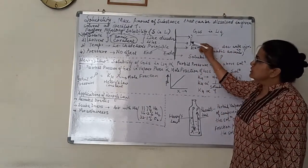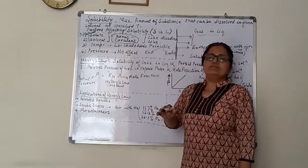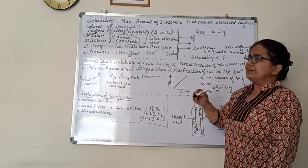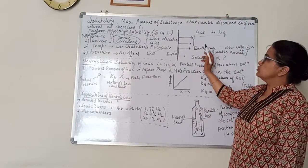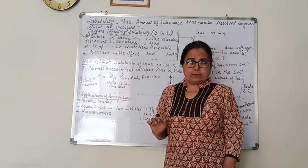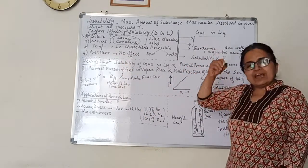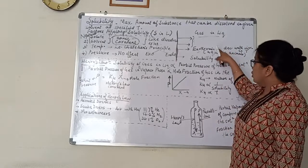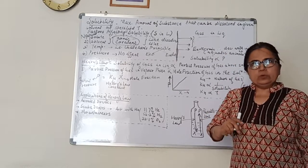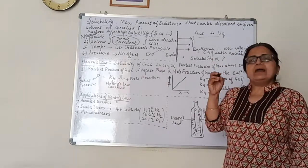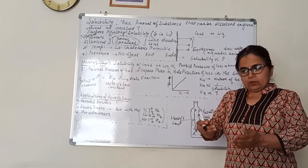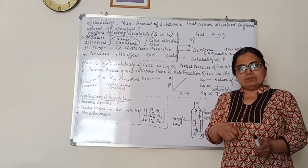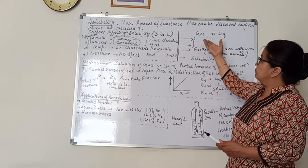For gas-liquid systems, the nature of solute and solvent does not affect much. The two main factors which affect the solubility of gas in liquid are temperature and pressure. The dissolution of gas in liquid is mainly exothermic; therefore, solubility decreases with the rise of temperature. One application: aquatic animals feel more comfortable in cold water than in warm water, because in cold water the amount of oxygen dissolved is more.